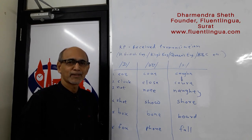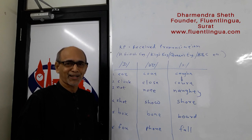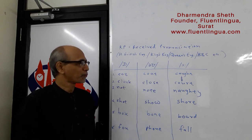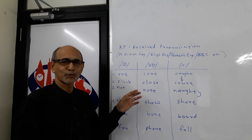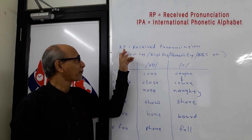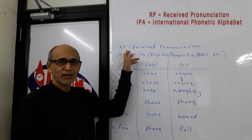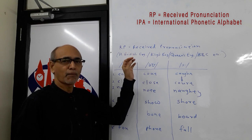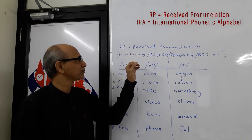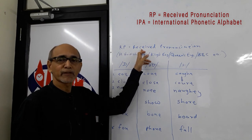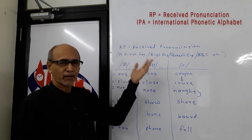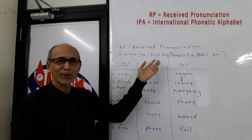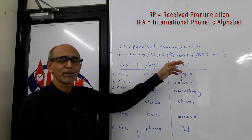Hello everyone. Today we intend to practice three important sounds in English. To practice these three important sounds, we have taken RP as the model. Many of you know that RP is the standard British variety of English, which is often used as a model for language learners. RP is actually Received Pronunciation. Roughly, people call it King's English or Queen's English, or sometimes BBC English.